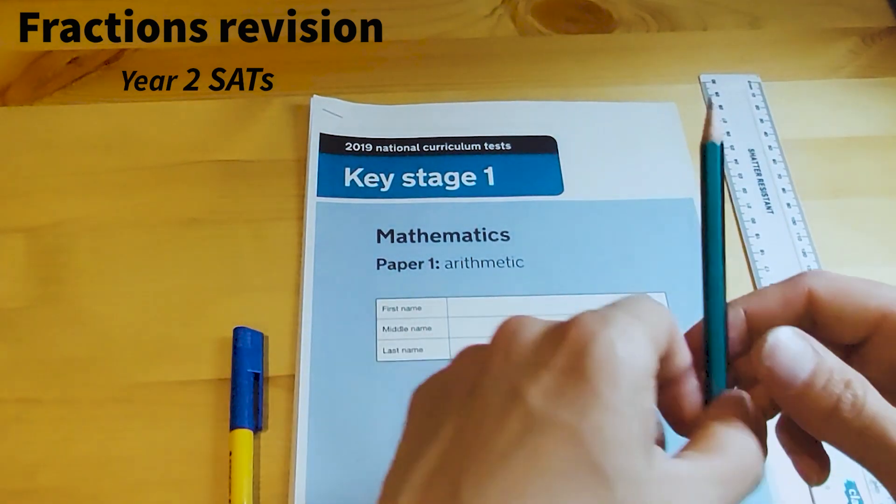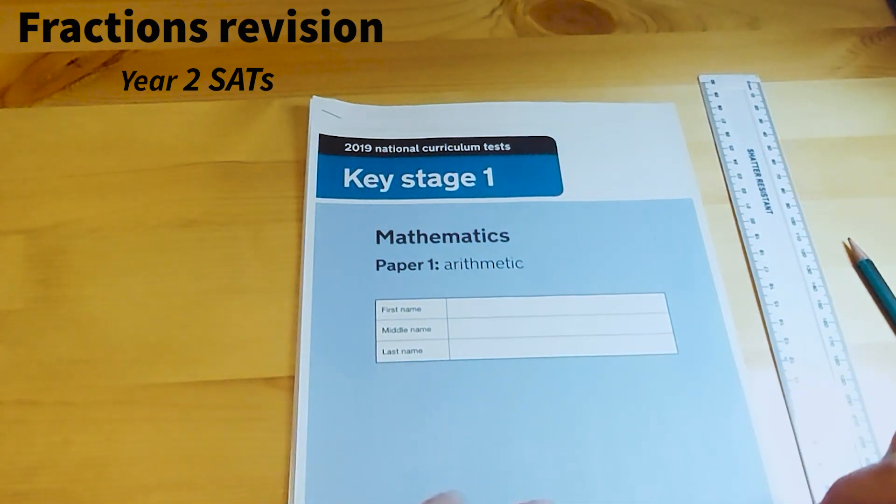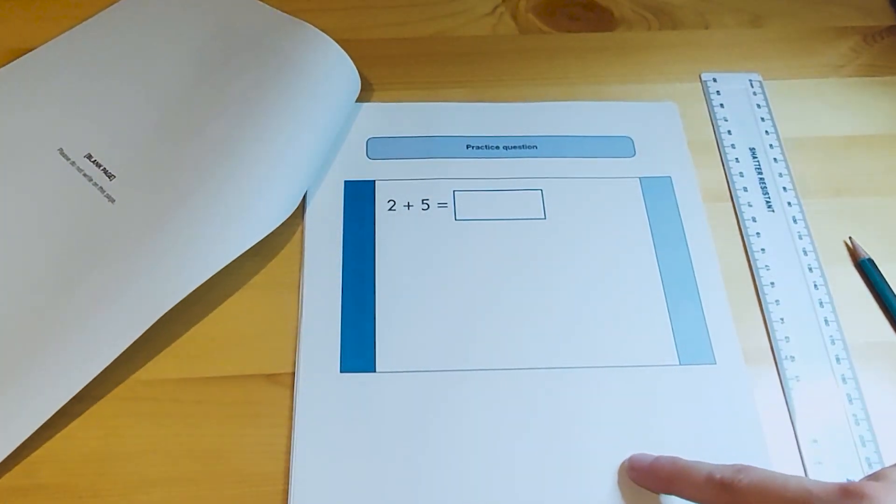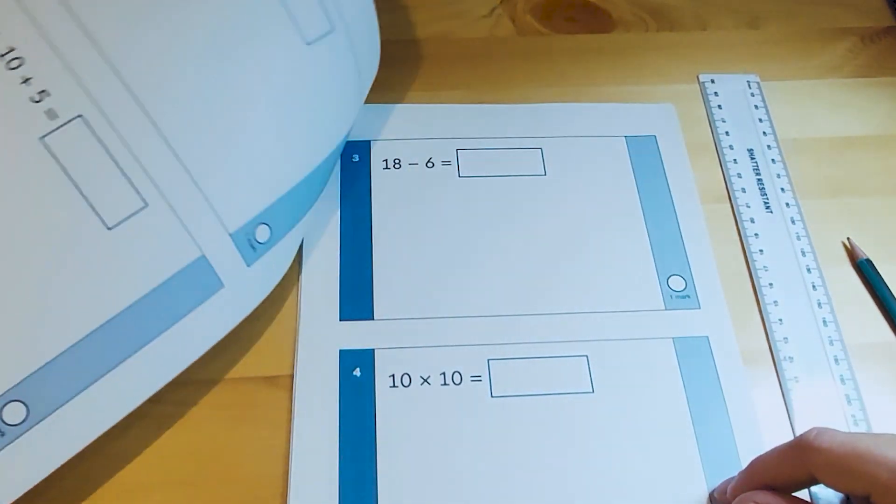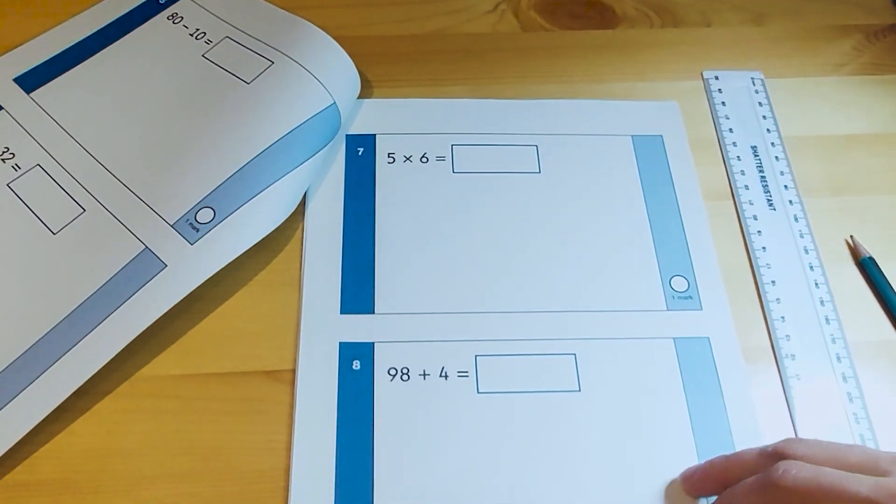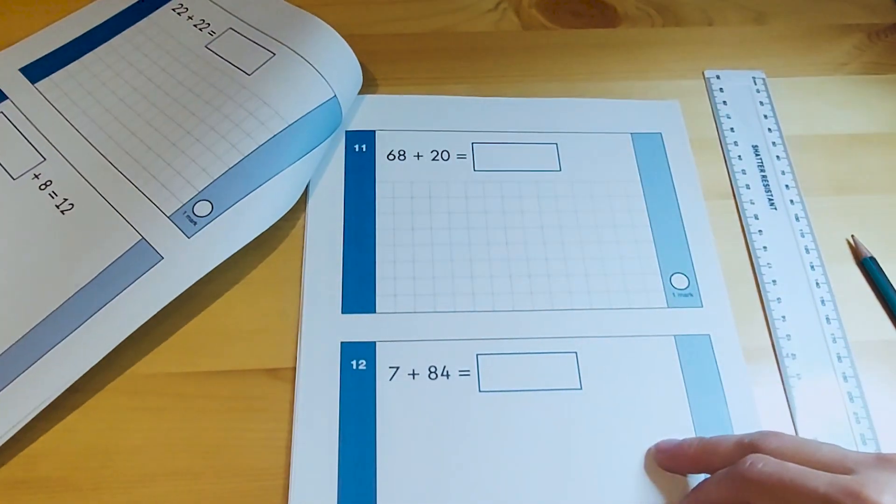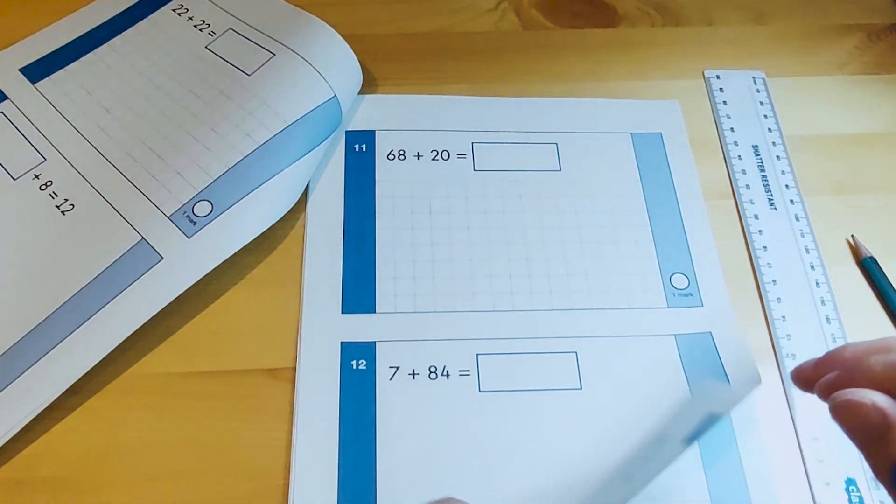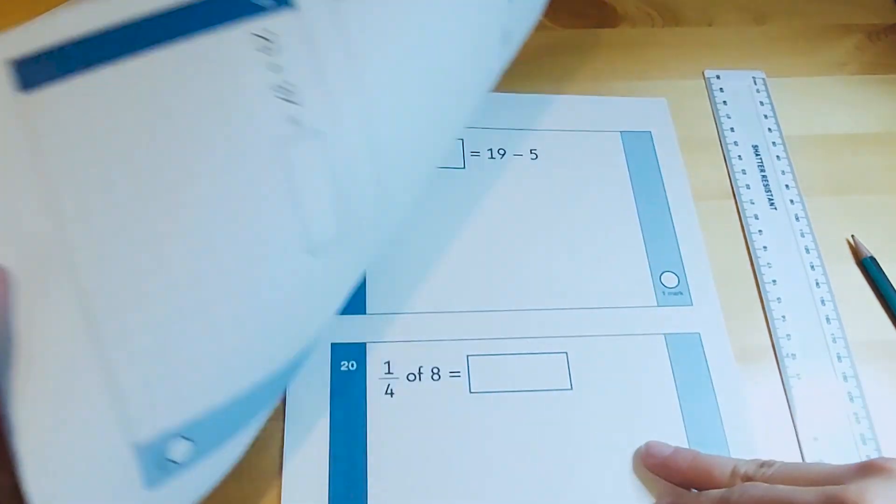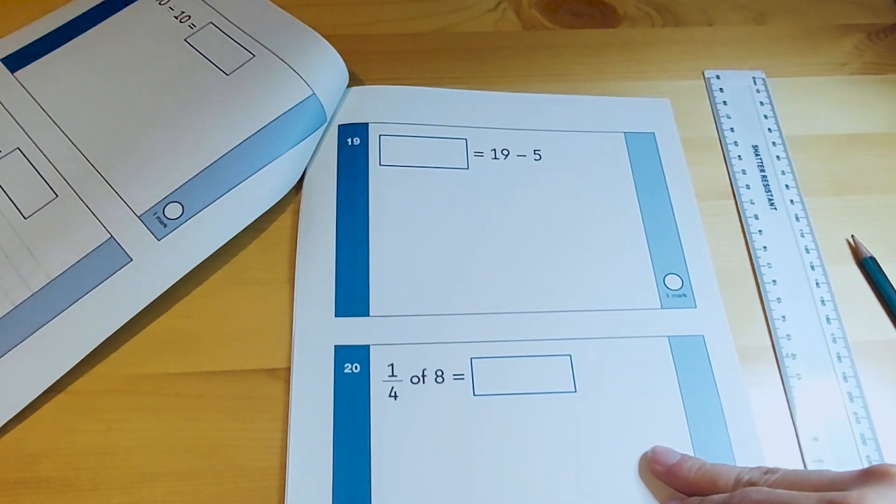So let's begin. If we open up the paper, it's going to look like this when your children get it in Year 2. I'm going to skip through the addition questions, subtraction questions, and multiplication questions because today I'm just going to show you how you can help your child answer the fraction questions.